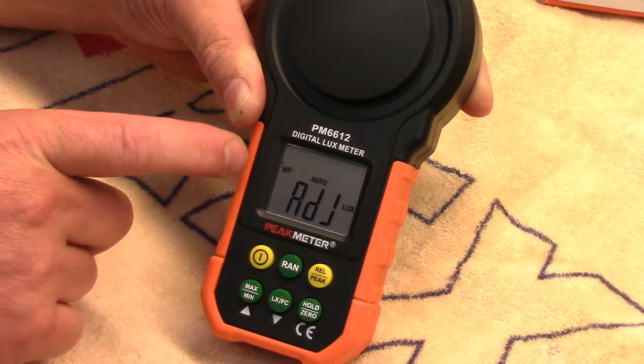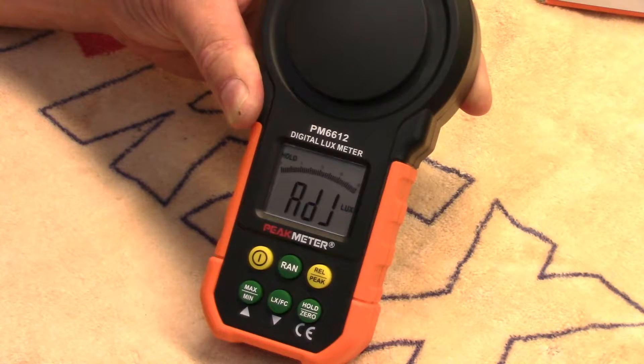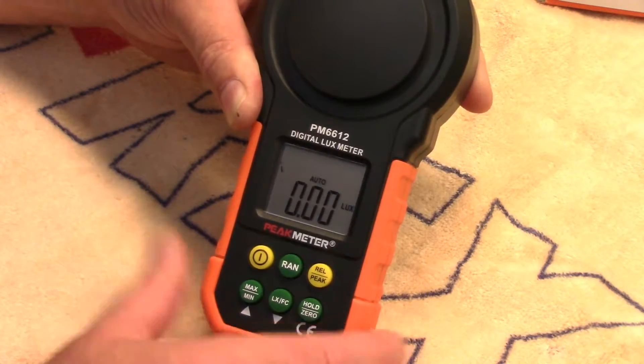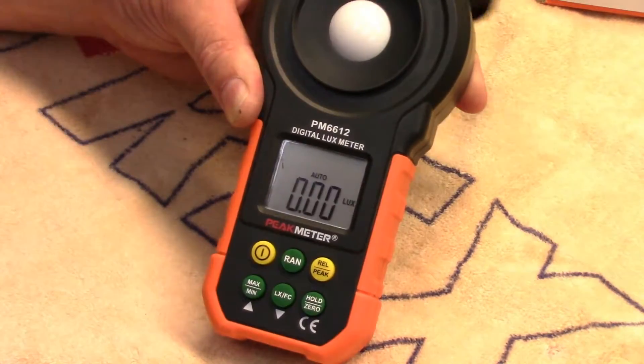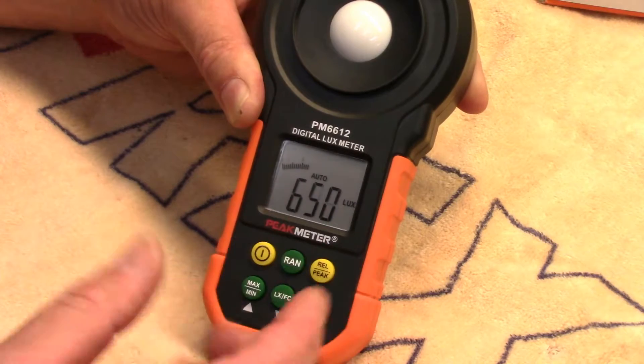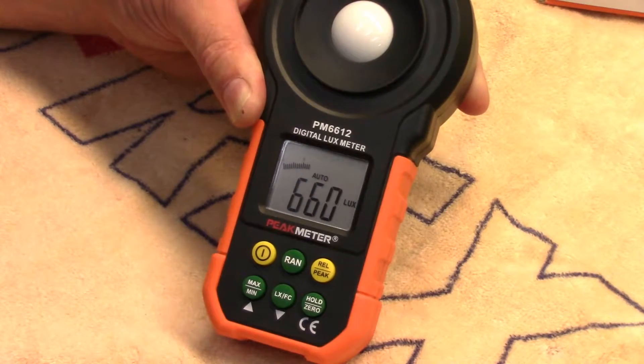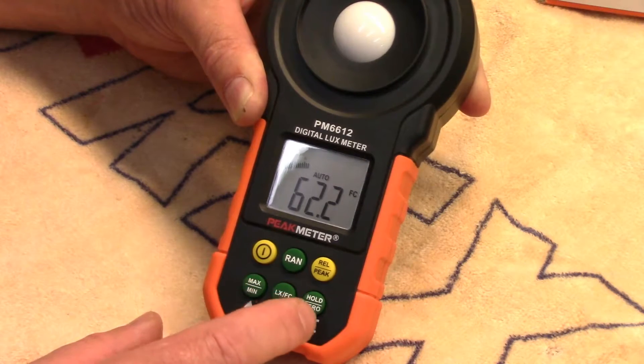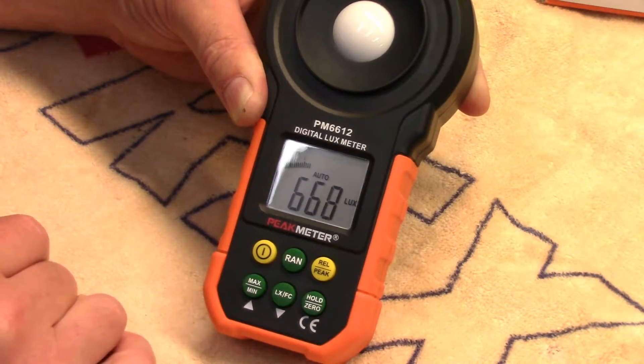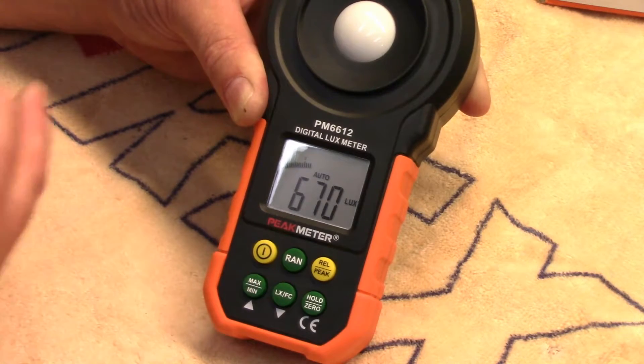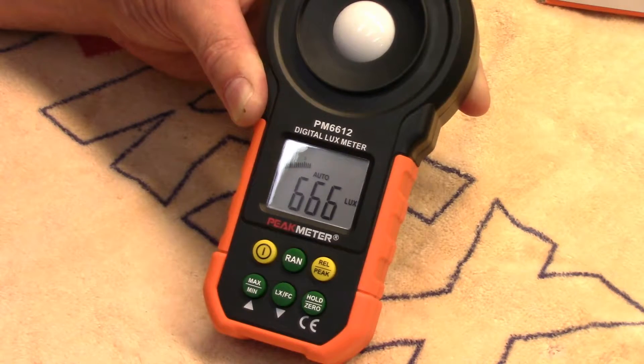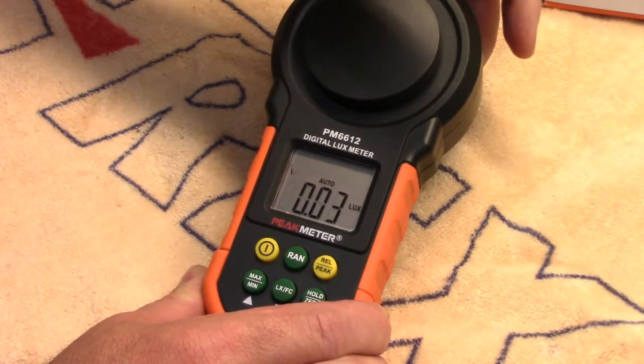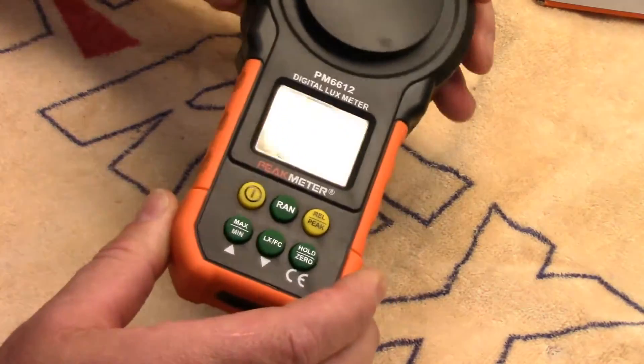That bar graph is actually used as a progress meter when calibrating. It's got two ranges: lux, which I assume most people would use, I don't know anyone who uses foot candles anymore, but you've got that option if you want it. And you've also got a min max so it'll record the minimum and maximum value. Pretty useful functions.